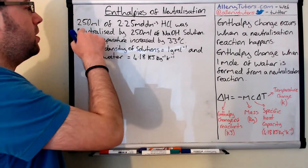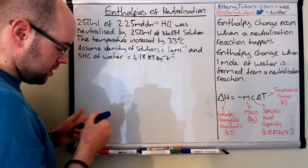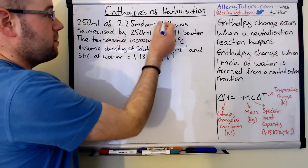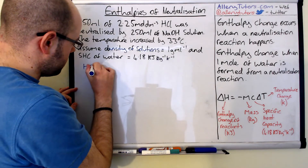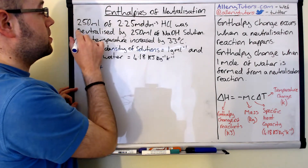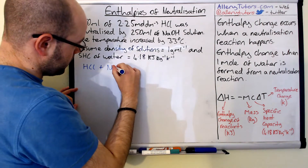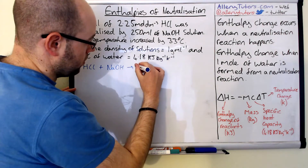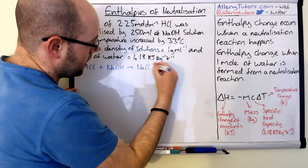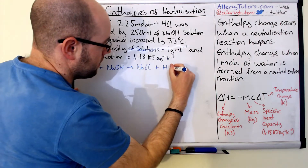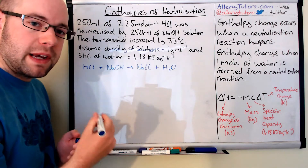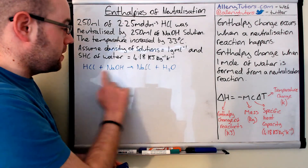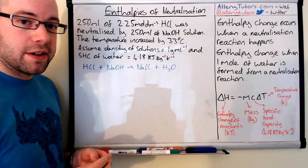So we'll write out our equation. We've got HCl reacting with sodium hydroxide, and this is going to form sodium chloride — which is your salt — and we're also going to form water as well. It's really important at this stage to make sure that the equation is balanced, as this will become useful later on. You can see here that this is already balanced, so we don't need to do anything else to that.